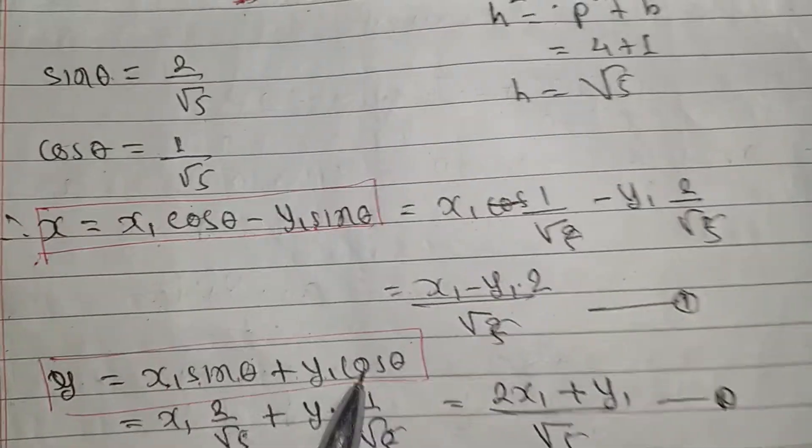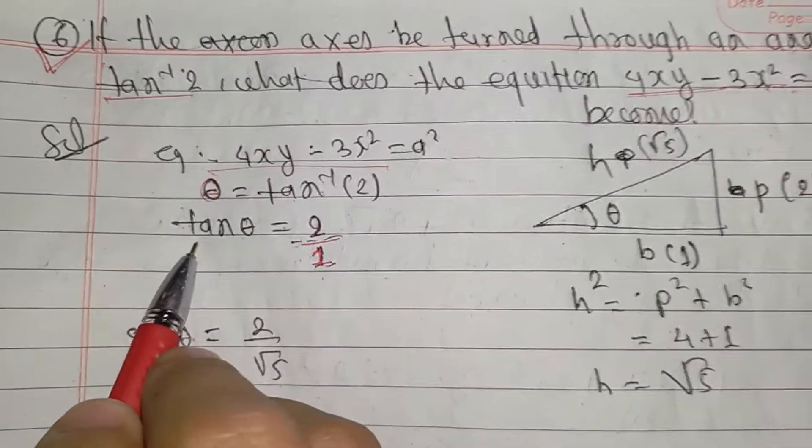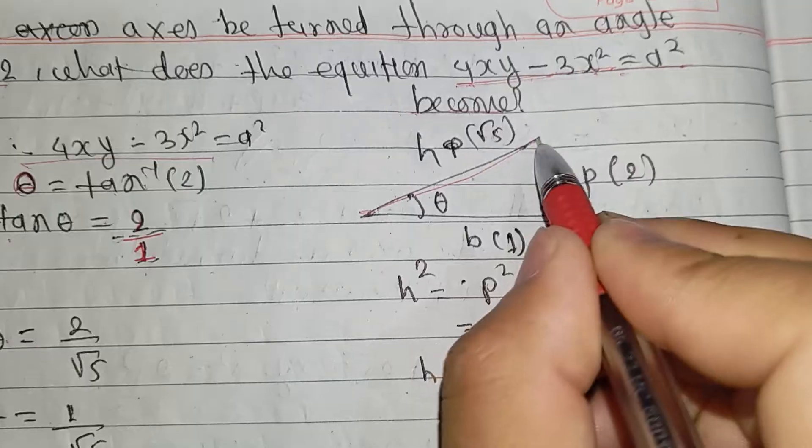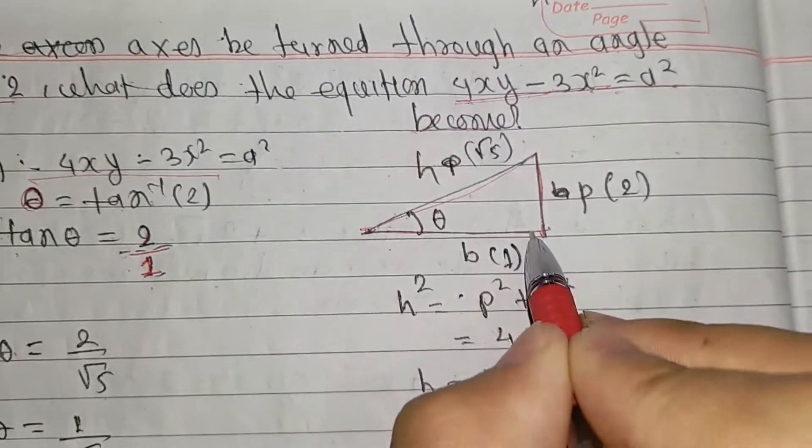We will use the triangle here. Tan equals P by B.